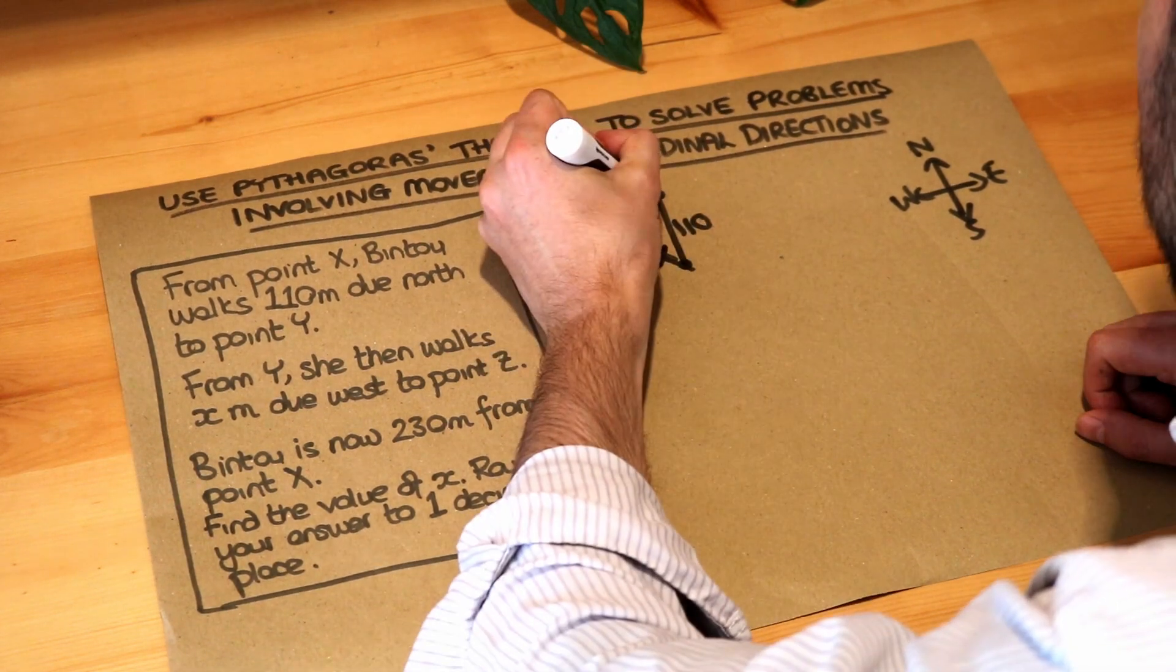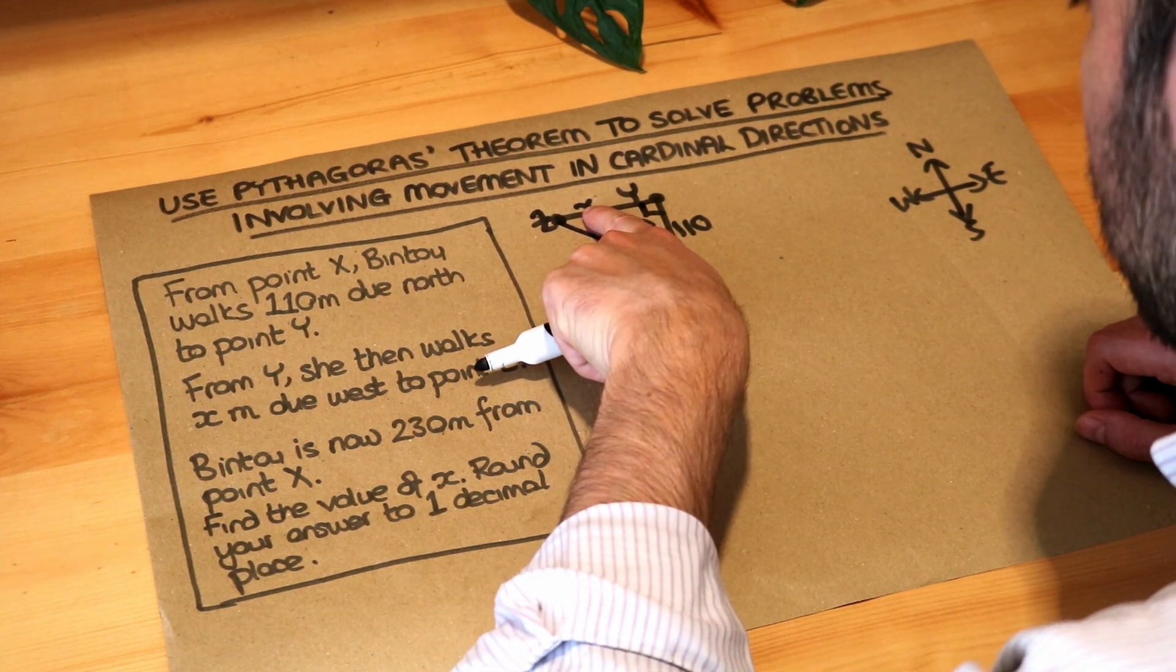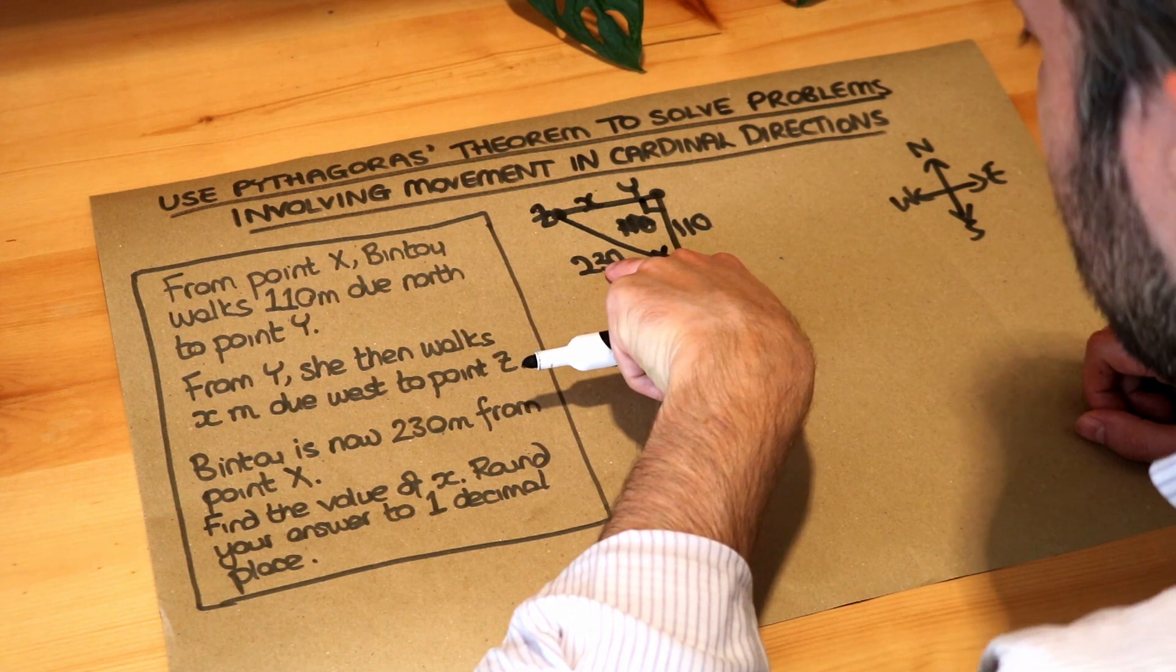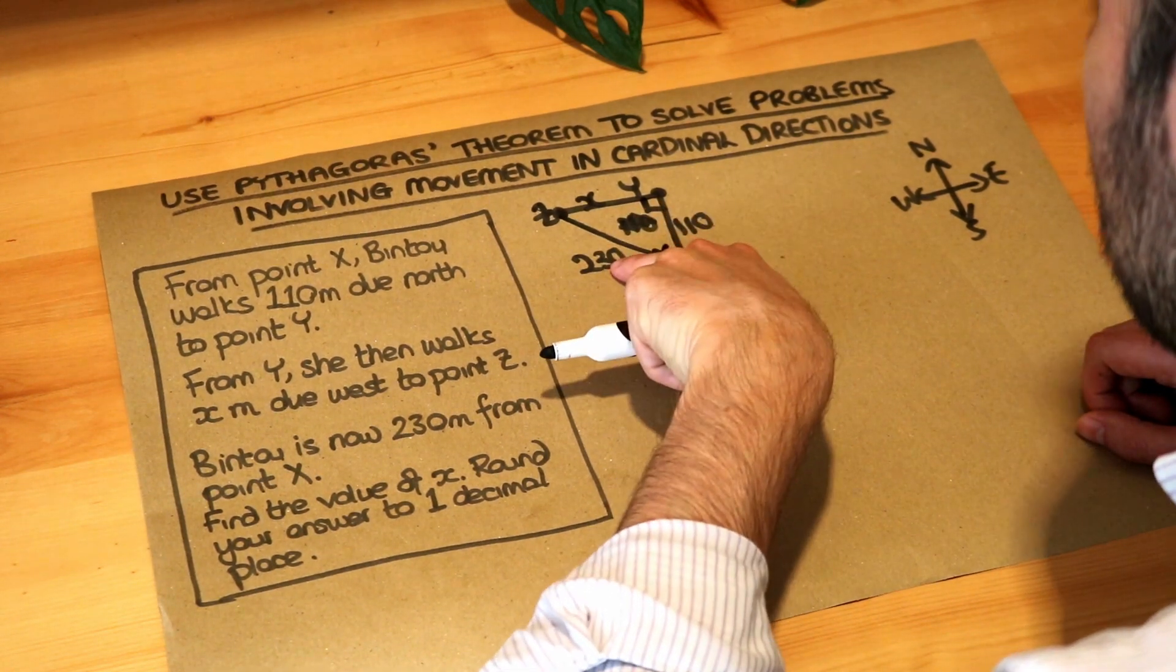So we've now got a right angle triangle. That's a right angle triangle where the two shorter lengths are x and 110, and the hypotenuse, the longest length which is opposite the right angle, that's 230.